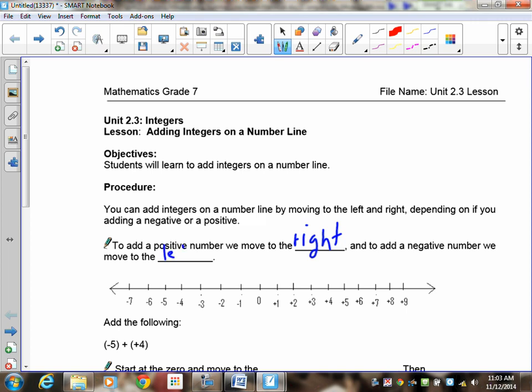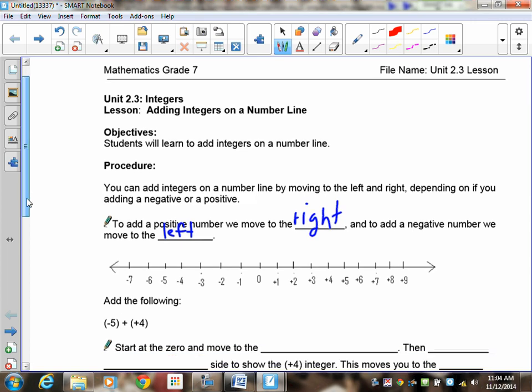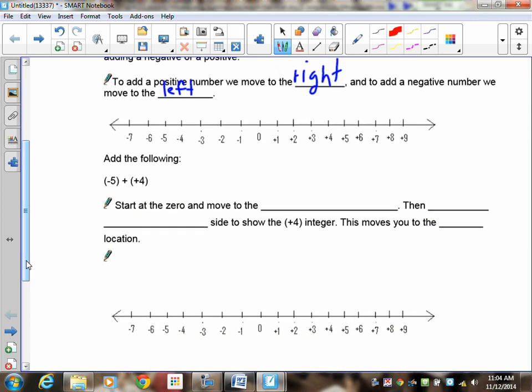And we're going to do what's called bubble jumping. So to add positive 5 plus positive 4, what you're going to do is start at the zero and move to the negative 5. I think I said positive 5. So you're going to start with adding negative 5 plus positive 4. Start at the zero and move to the negative 5. Now to do that, you're going to start at zero and go 1, 2, 3, 4, 5.